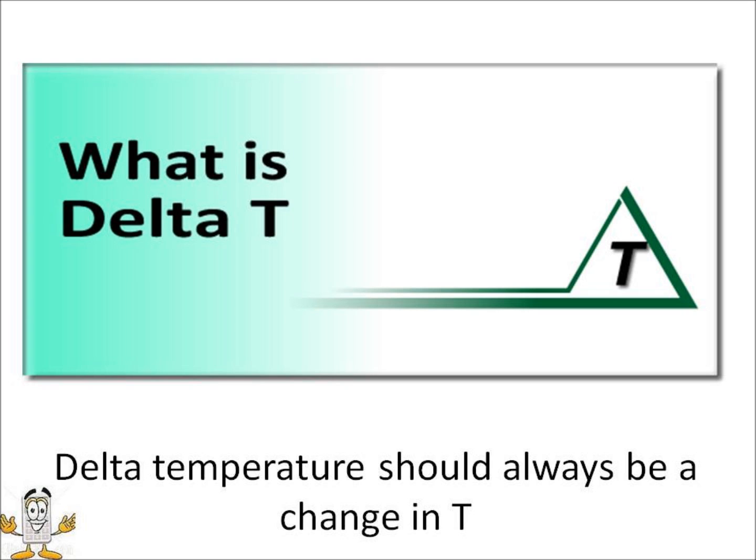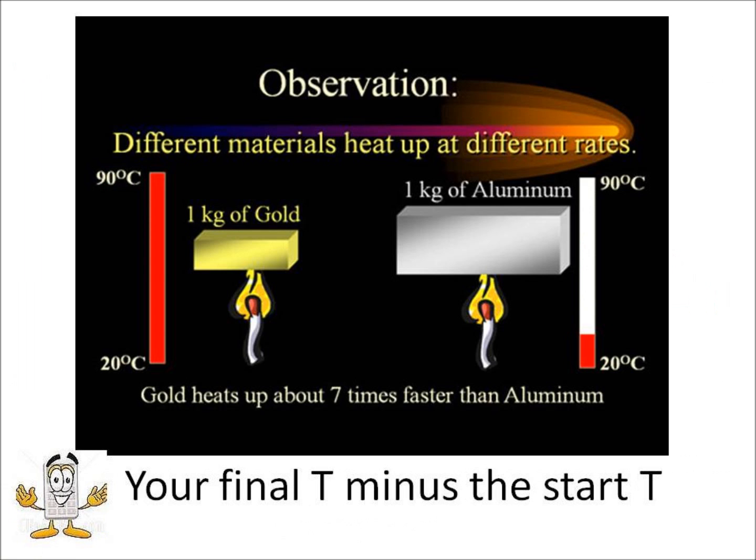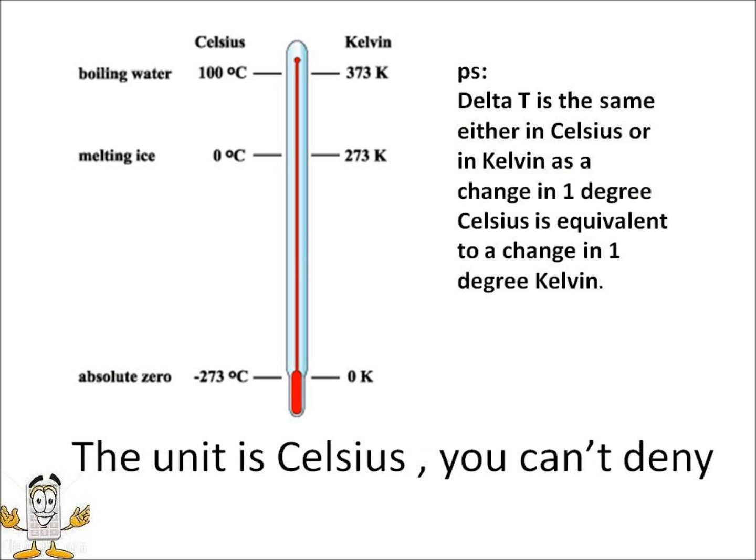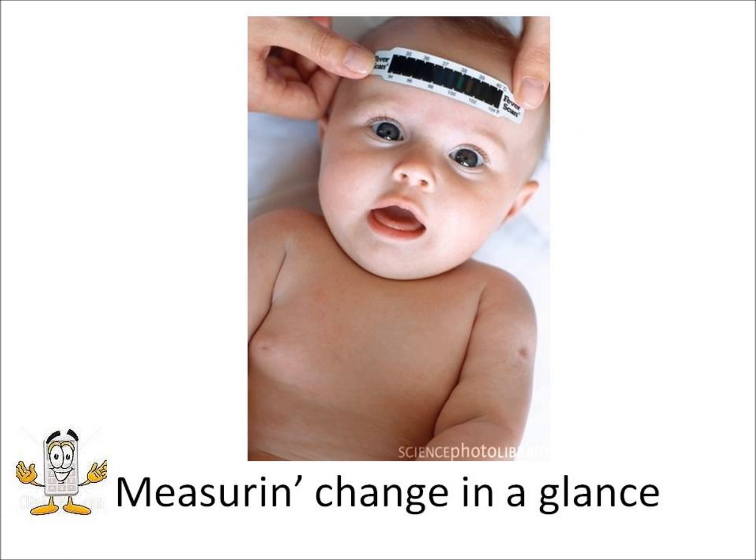Delta temperature should always be a change in T - your final T minus the start T. The unit is Celsius, and you can't deny you're measuring change.